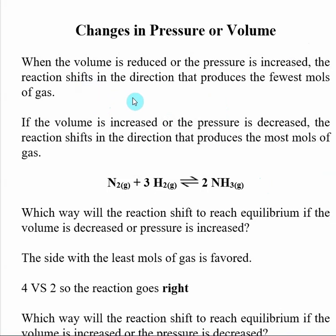When the volume of my reaction is reduced, by that I'm making the reaction container smaller. In doing that, I'm actually increasing the pressure. So if the volume is reduced and the pressure is increased, the reaction is going to shift in the direction that produces the fewest number of moles of gas. So we need to look at the reaction.